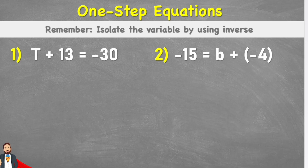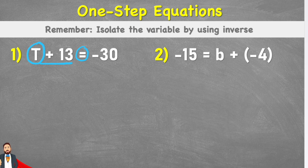So first let's look at our equation here and try to identify any features that we see. So this t represents our variable, our unknown value, and at the moment it's connected to this plus 13. Then we have our equal sign showing that everything on either side of the equal sign is therefore balanced. And on this other side I have a negative 30.